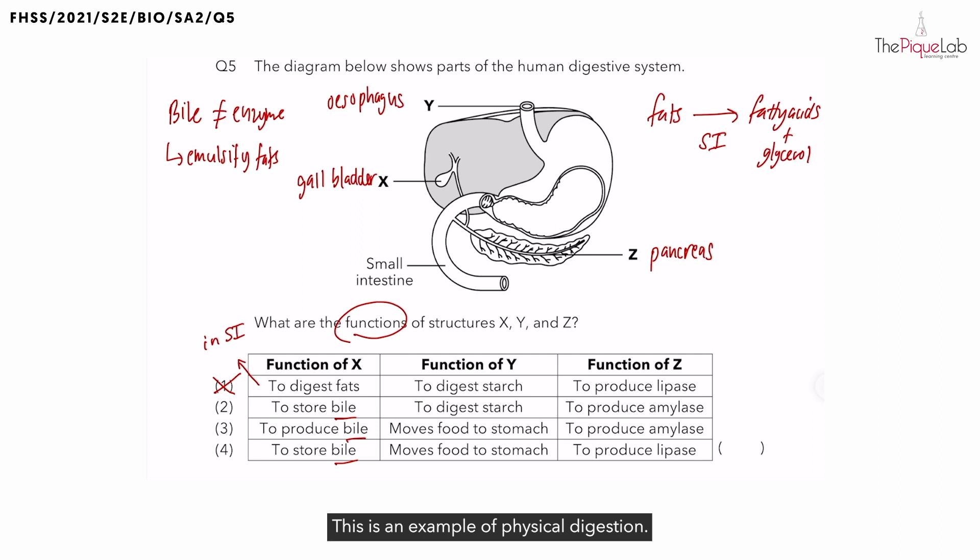This is an example of physical digestion. So the emulsification of fats is another example of physical digestion that happens in your digestive system.